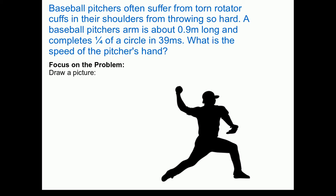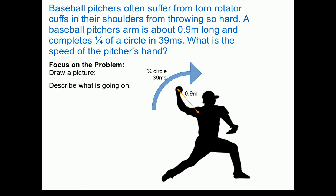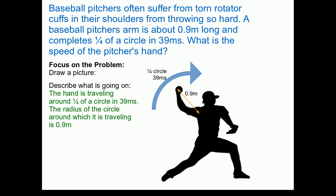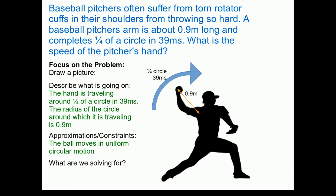Let's begin by focusing on the problem and drawing a picture. We have our baseball pitcher — the length of the arm is about 0.9 meters, and the arm goes around a quarter of a circle in 39 milliseconds. In words: the hand travels around a quarter circle in 39 milliseconds, and the radius of the circle is 0.9 meters. The ball is essentially moving in uniform circular motion, with essentially constant speed. We are solving for the speed of the pitcher's hand, measured in meters per second.